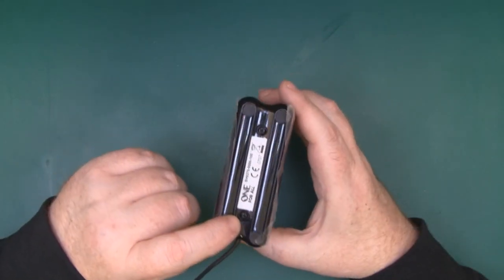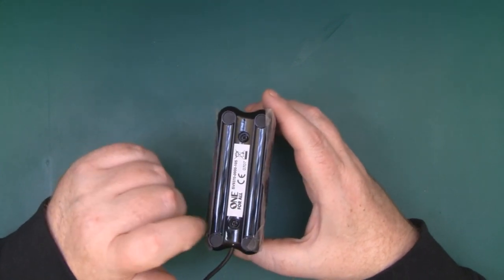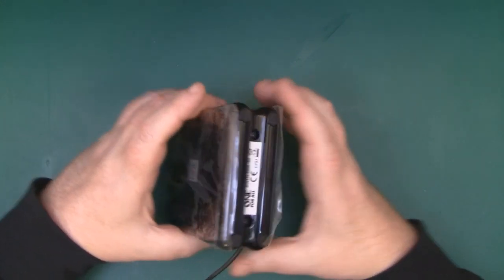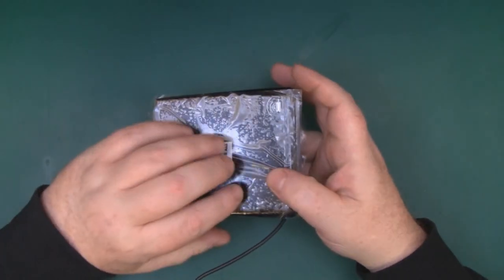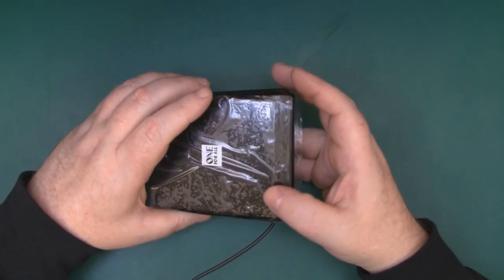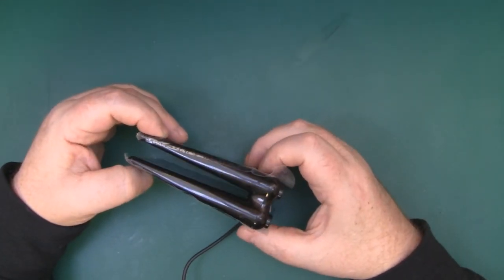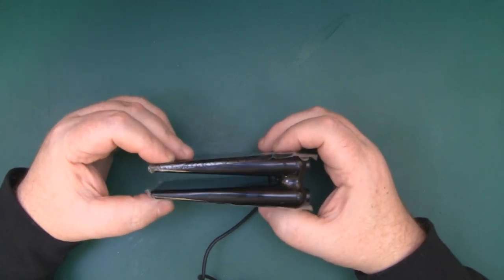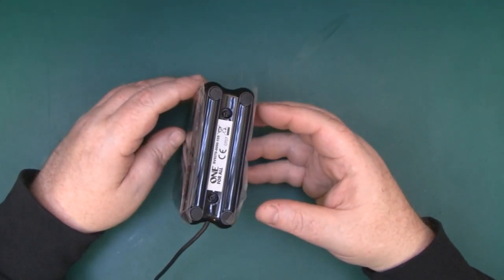To open this up then, it just looks like there's these two phillips screws here. If I remove them it should just come apart from the main body of the case. I'm expecting to find a couple of simple patch antennas inside, but we won't know until we open it up.